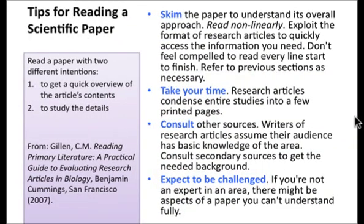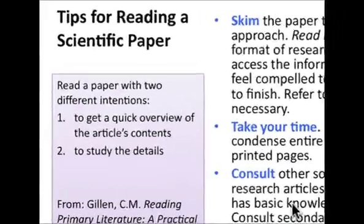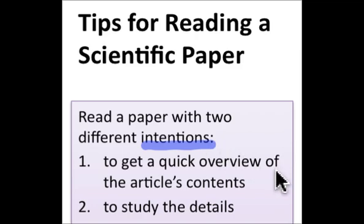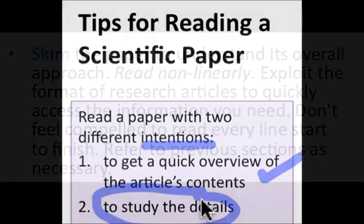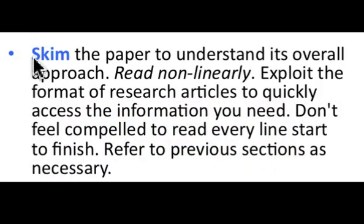Reading the scientific literature can be a little daunting, since it's different than other kinds of reading that you're more familiar with, and because you've probably not spent a lot of time reading scientific papers. You'll want to read with two different purposes in mind. First, get a quick overview by looking at the title and the abstract, the figures and the figure captions. Once you know what's in the paper, then you'll want to study the details. You're going to skim and read the paper in a very nonlinear fashion — don't expect to read from beginning to end line by line, but rather find the information you're most interested in and ignore what doesn't seem relevant.